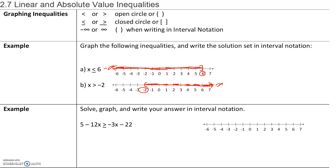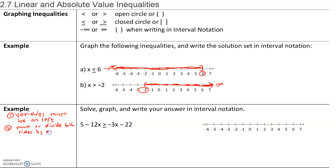Now let's solve, graph, and write the answer in interval notation for the following inequalities. The rules for solving inequalities are almost identical to those for solving equations, with two exceptions. Exception one: the variables must be on the left-hand side — in inequalities, variables must be moved to the left. Exception two: when you multiply or divide both sides by a negative, the inequality reverses.